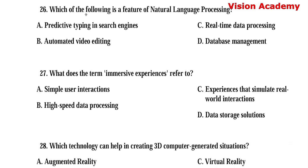Question number 26. Which of the following is a feature of natural language processing? Option A: Predictive typing in search engines. Option B: Automated video editing. Option C: Real-time data processing. Option D: Database management. Here, option A, predictive typing in search engines, is the right answer.